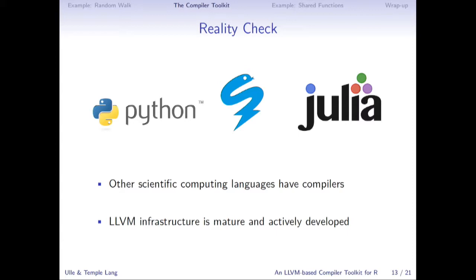As a reality check, lots of other people are taking this approach with other languages. In the Python world, there's a project called Numba, which compiles a subset of Python code, especially numerical algorithms, and it's worked very well. There's also the Julia project, which has compiler technology built in. Both of these projects use the LLVM infrastructure, which is an open-source compiler infrastructure. It's the same infrastructure that we use, and it's very mature and actively developed — part of why we chose it.